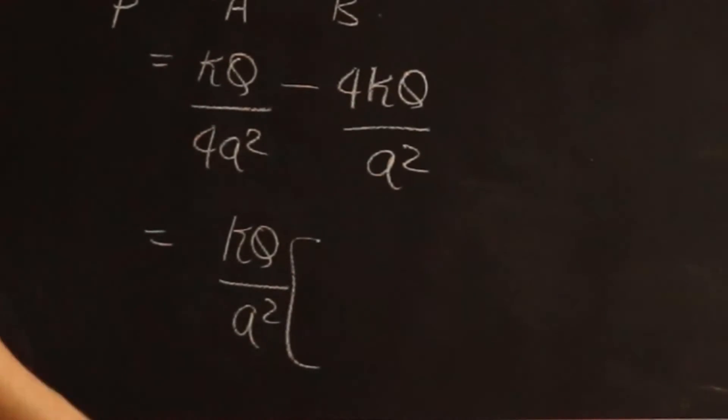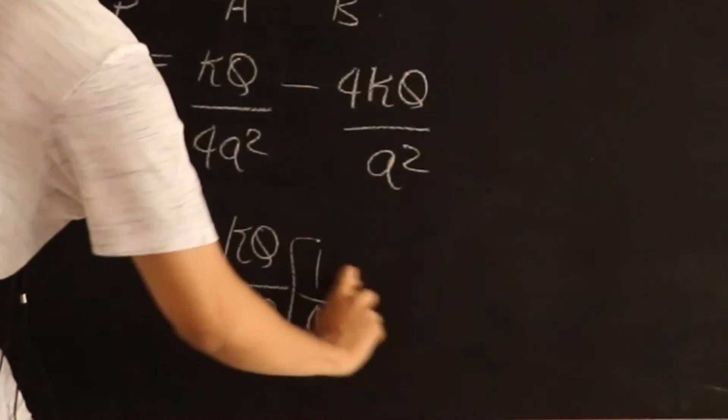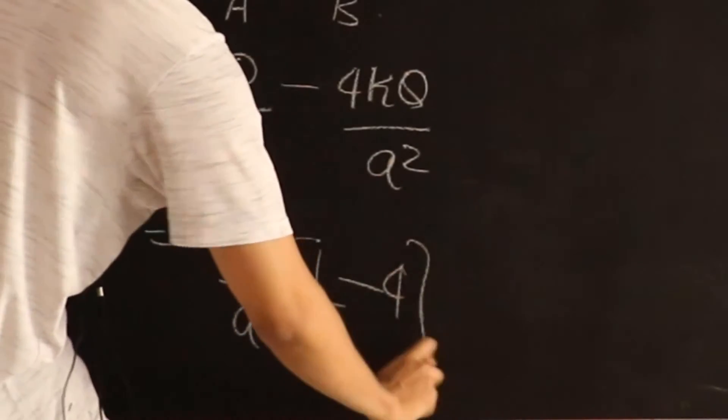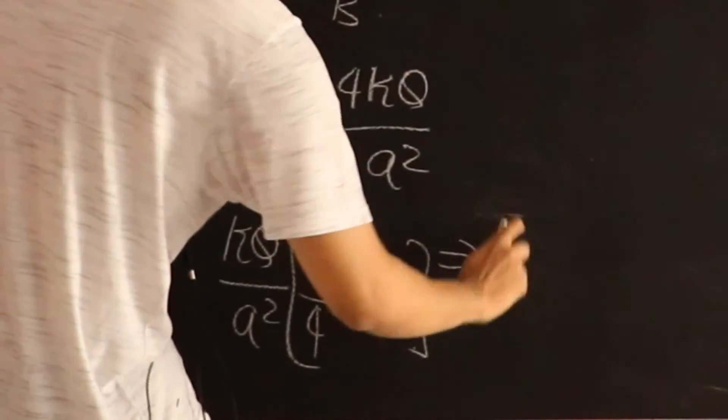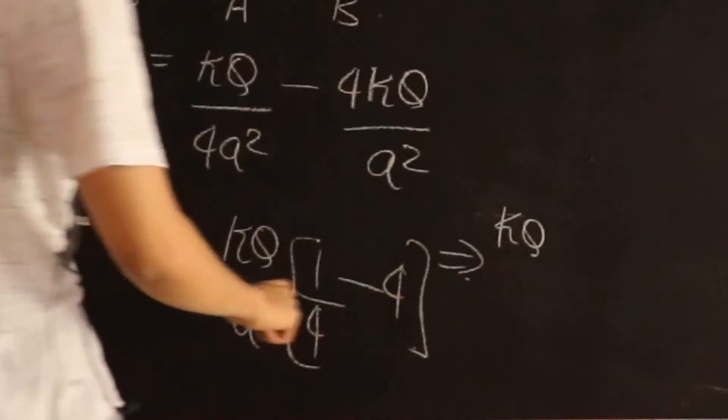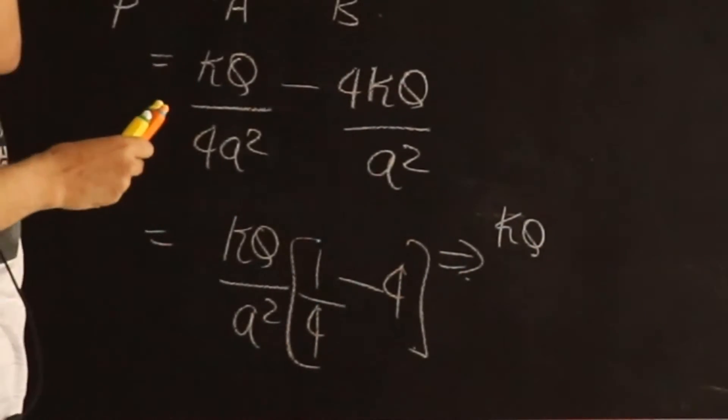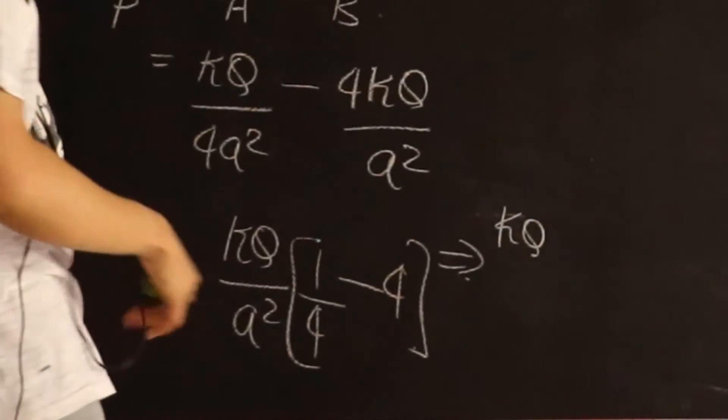we're going to get 1 over 4 minus 4, and that tells us kq into, I get 1 minus 16, that's minus 15, divided by 4a square.